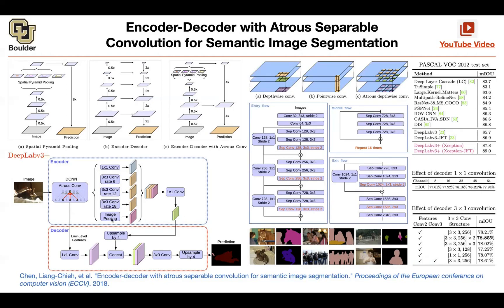It's building upon the ideas of DeepLab version 3, which was to pool your entire image and put it here. The other contributions are on the decoder side — this arrow here corresponds to this arrow here, and the other one corresponds to this arrow here. Now you're combining information at multiple scales and giving it a U-Net type of architecture.